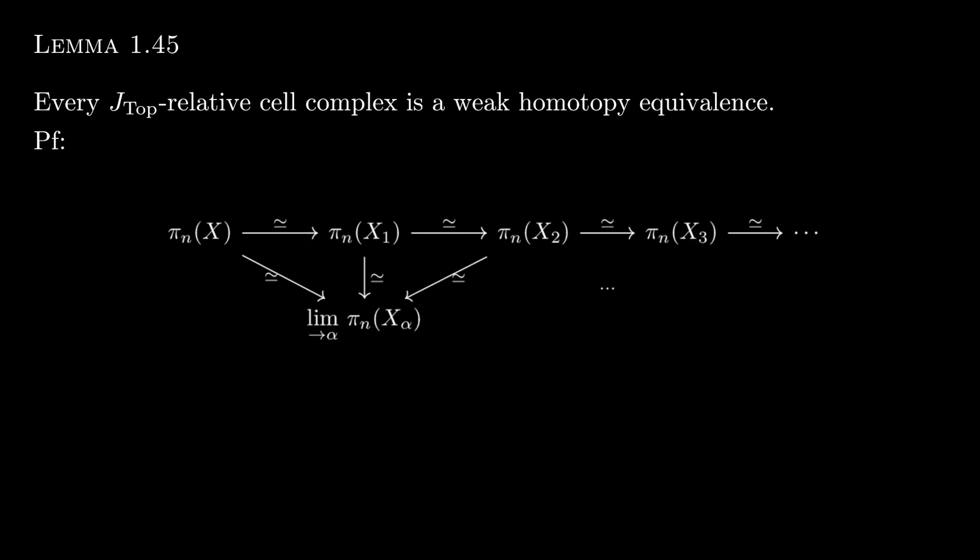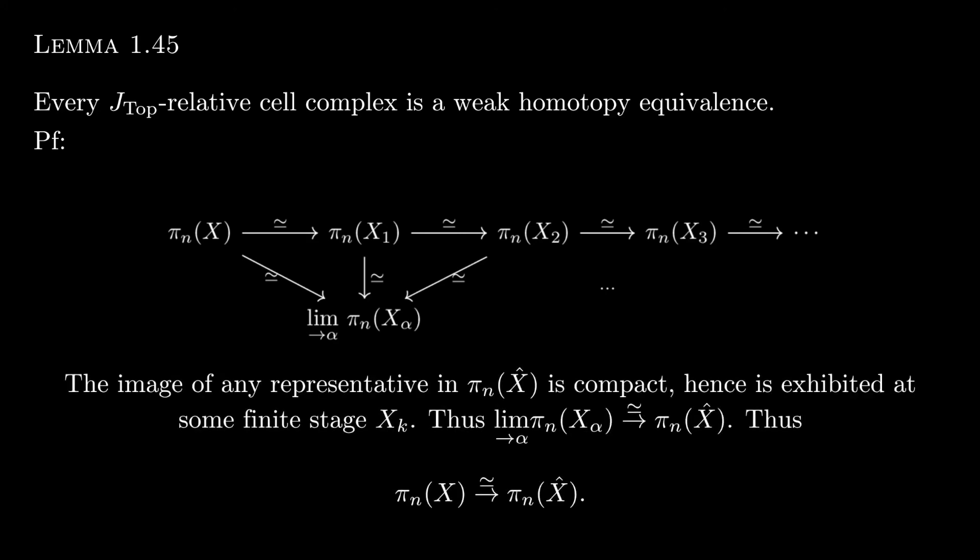So now I want to claim that it's enough that this holds for finitely many stages. And that's because of our technical lemma from before. So that was the lemma that said that every compact subset of a cell complex intersects only finitely many cells. Why is that important?